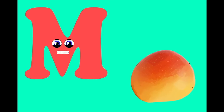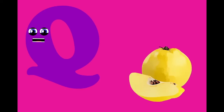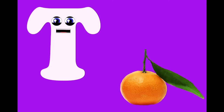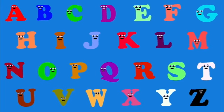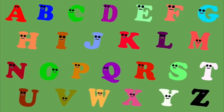M — it is the first letter of mango. N — it is the first letter of nectarine. O — it is the first letter of orange. P — it is the first letter of pineapple. Q — it is the first letter of quince. R — it is the first letter of red currant. S — it is the first letter of strawberry. T — it is the first letter of tangerine. Eat your fruit every day and you will grow real strong.